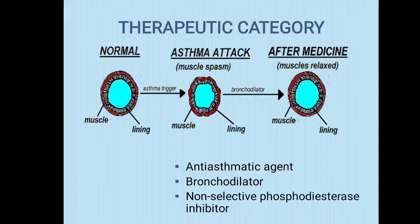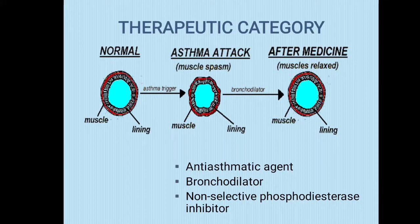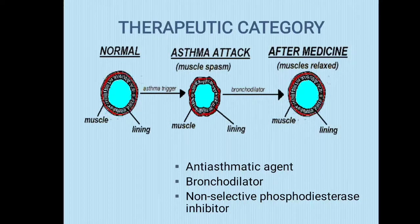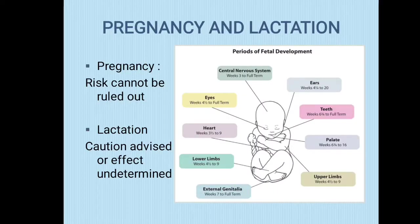Regarding its therapeutic category: in the normal muscle lining, you can see the muscles and lining in normal condition. When an asthma attack or trigger occurs, the muscle lining contracts, leading to bronchoconstriction. By using Acebrophylline, the bronchioles are dilated and the muscles become relaxed after use of the medicine.